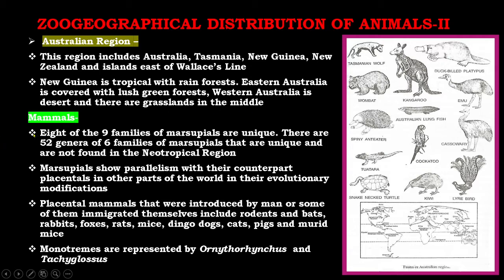One characteristic in mammals: eight of the nine families of marsupials are unique. There are 52 genera of six families of marsupials that are unique and are not found in the Neotropical region. Marsupials show parallelism with their counterpart placentals in other parts of the world in their evolutionary modifications.